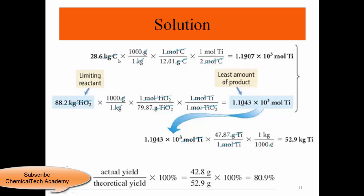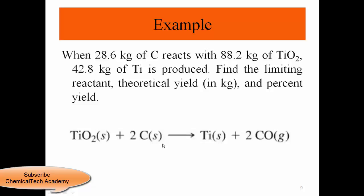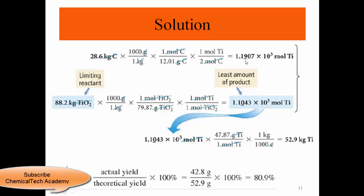For carbon: 28.6 kg × 1000 to convert to grams, divided by atomic mass, then apply the molar ratio (2 moles C → 1 mole Ti), giving 1.1907 × 10³ moles of titanium. For titanium dioxide: 88.2 kg × 1000 divided by molar mass, and since 1 mole TiO₂ → 1 mole Ti, we get 1.1043 × 10³ moles of titanium. TiO₂ produces fewer moles, so TiO₂ is the limiting reactant.